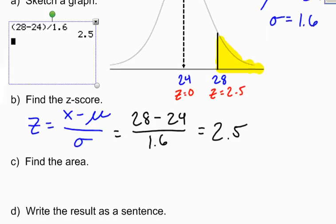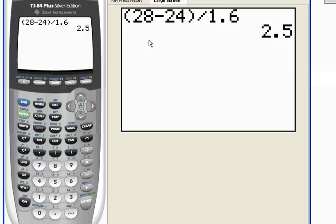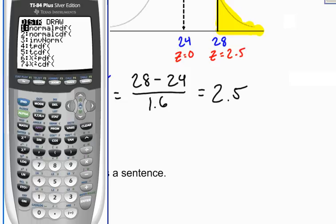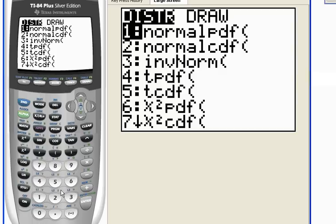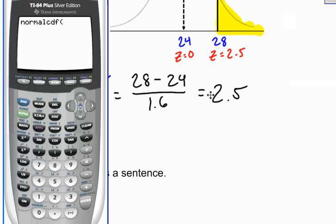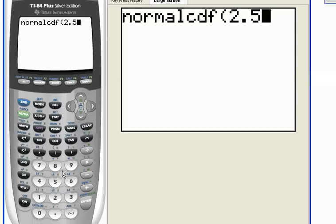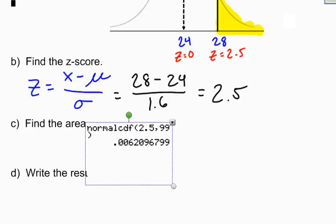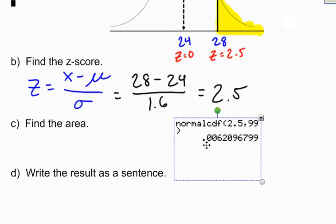Once again, I need to go to my calculator and use the normal CDF function. If you haven't been watching my videos, you might want to go back and watch some of my previous ones on finding the area under the curve so that you can figure out why I'm doing what I'm doing. So I'm going to go second vars to get to my normal CDF function. Choose number 2. And my left hand boundary is 2.5, and my right hand boundary is going to be positive 99. So 2.5 comma 99. You always want to give the left hand boundary first, the left hand z-score and then the right hand z-score. And I find that the area that I have shaded under the normal curve is right here, 0.0062.